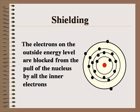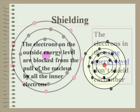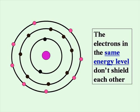The electrons on the outside energy levels are blocked from the pull of the nucleus by all the inner electrons. The inner electrons protect the outer electrons from the pull of the nucleus by taking that pull themselves. If you add electrons to the same energy level, they don't shield each other — they don't protect each other from the pull of the nucleus.